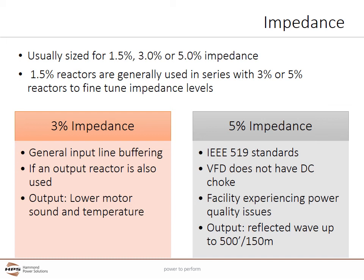Select 5% impedance as part of a solution to meet IEEE 519 harmonic standards and when a VFD does not have a DC choke. If a facility is already experiencing power quality issues, 5% should be considered. 5% is a good choice on the output to mitigate the reflective wave issue up to 500 feet or 150 meters.